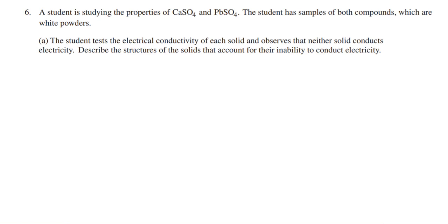In this four-point problem, we're going to be starting off with, you can see we have two substances that are white powders. We have calcium sulfate and we have lead(II) sulfate. And it says, A says,